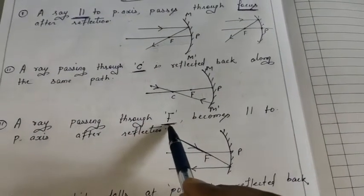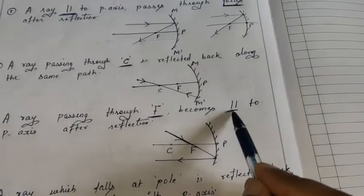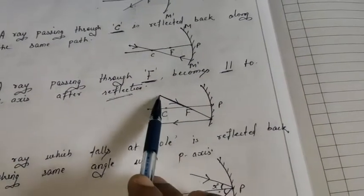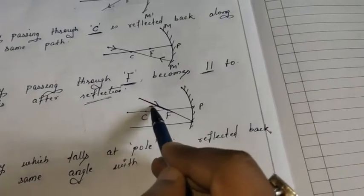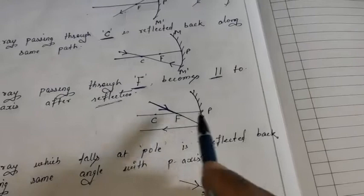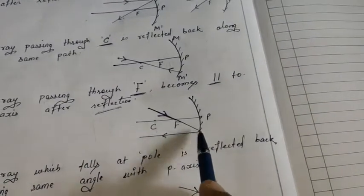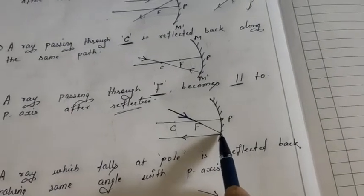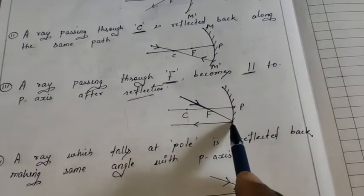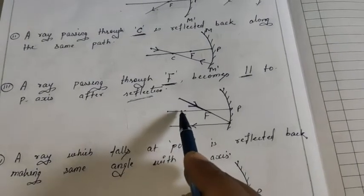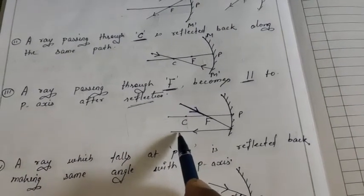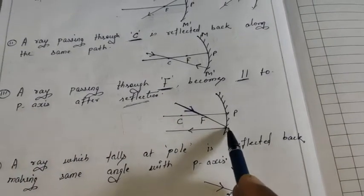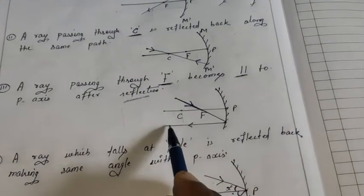Third rule: Ray passing through focus becomes parallel to principal axis after reflection. Agar ek ray focus se pass karegi, toh woh principal axis ke parallel ho jaayegi reflection ke baad. Jaise mirror se takraayegi, yeh parallel ho jaayegi principal axis ke.